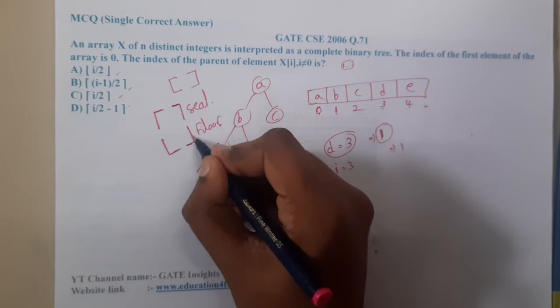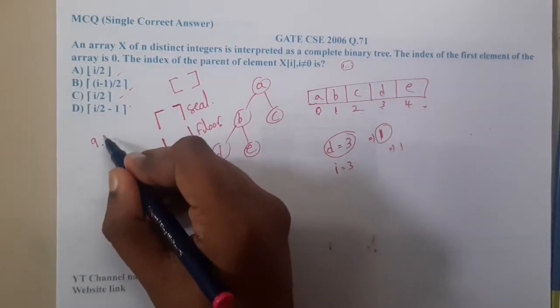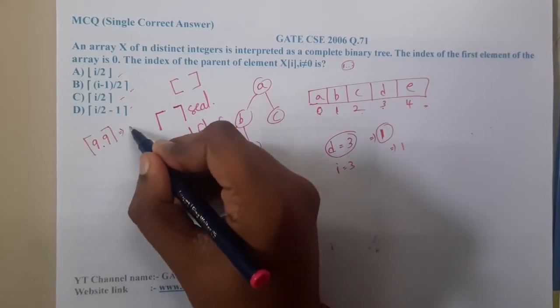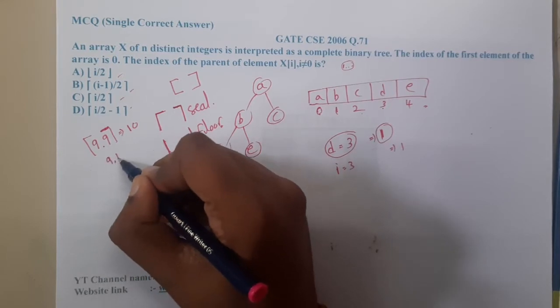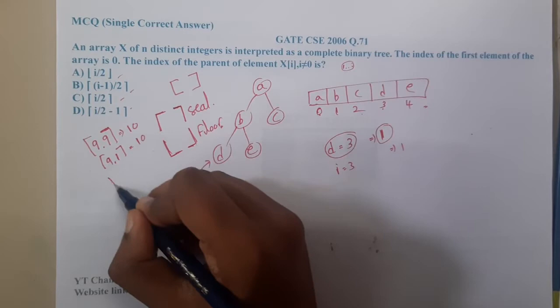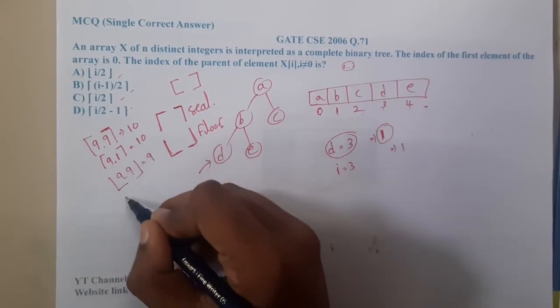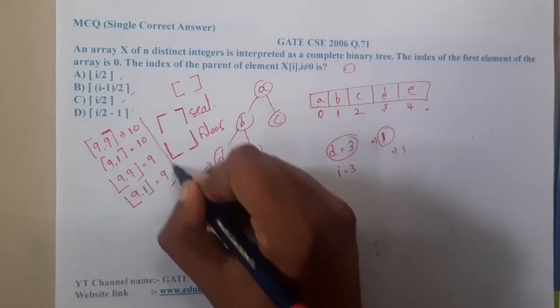And the values: if you have 9.9 in ceil value it will give the answer as 10. It will take the maximum value. Even if you give 9.1 ceil value, it will give 10. If you take floor value of 9.9, it will give 9. Similarly floor value of 9.1 will also give 9.